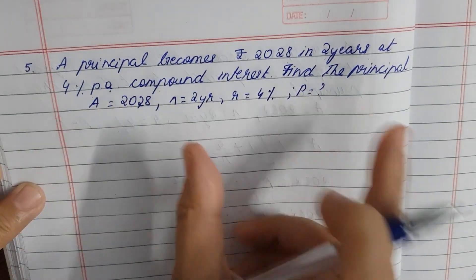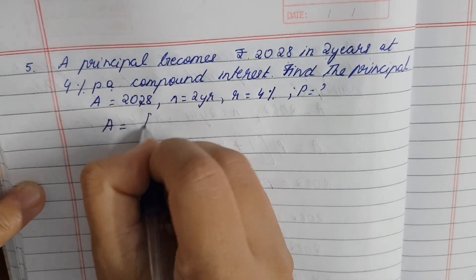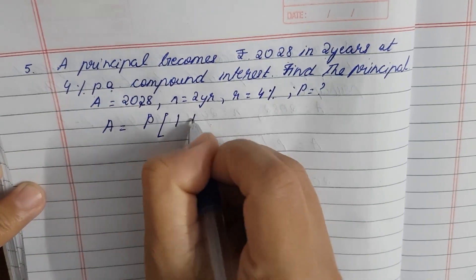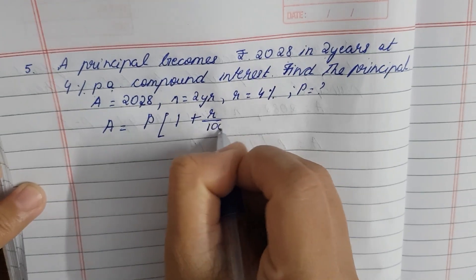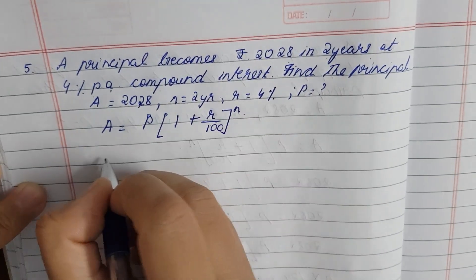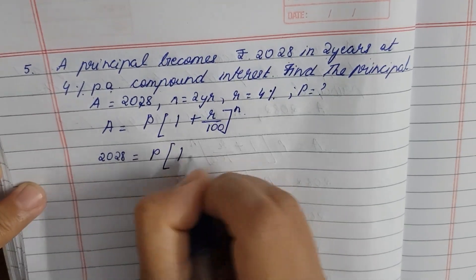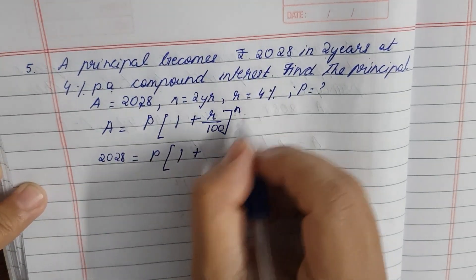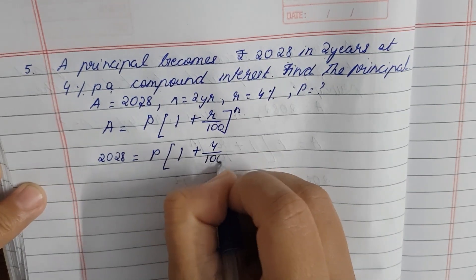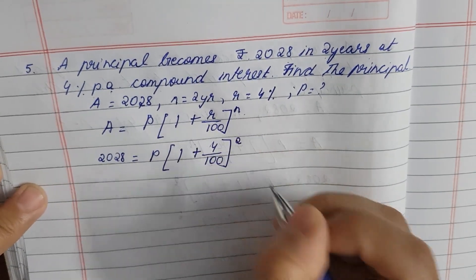So A is equal to P into 1 plus R by 100 to the whole power N. So A, another 2028, is equal to principle P. 1 plus R is another 4 percentage. So 4 by 100 and N another 2 years. So 2.